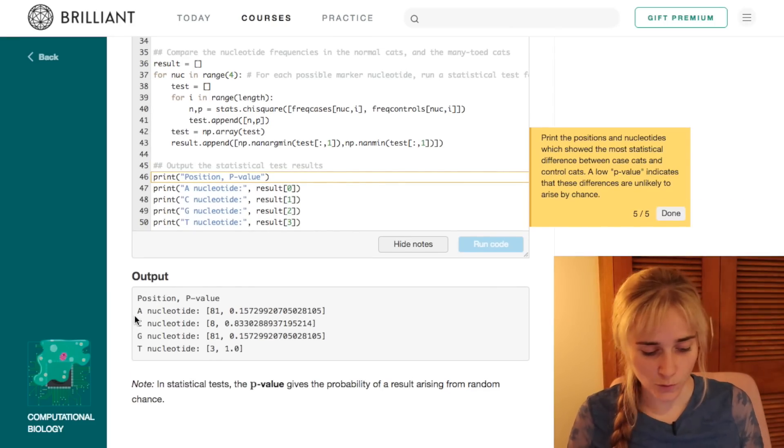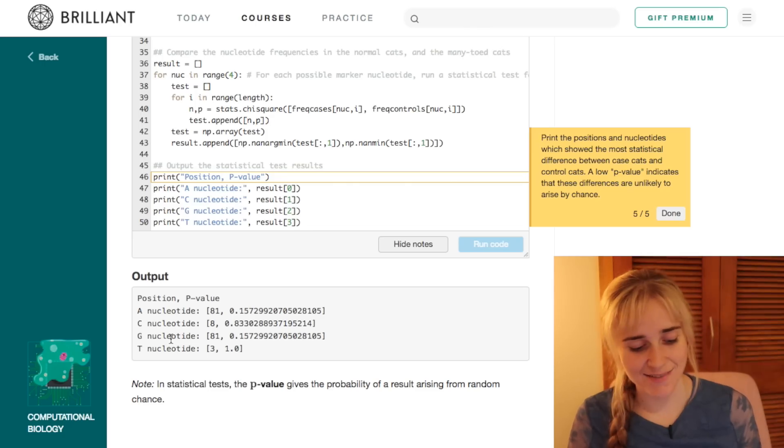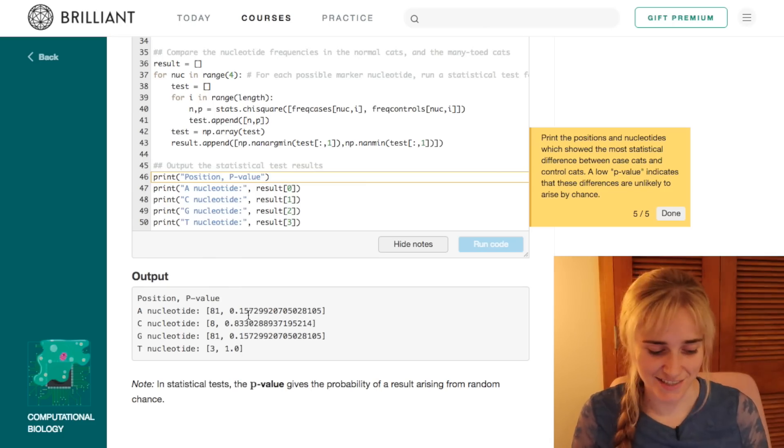So this is our output here. We have four different potentially offending nucleotide bases or changes in the base. We have the position in the DNA sequence where it occurs and the p-value, or how likely it is to be basically causing this condition in the cats.